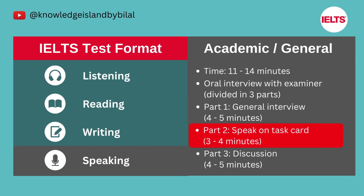Part Two is the individual long turn. The examiner gives the test taker a task card which asks them to talk about a particular topic, including points to cover and instructions to explain one aspect of the topic. Test takers are given one minute to prepare their talk and are provided a pencil and paper to make notes. The examiner asks the test taker to talk for one to two minutes, then stops them after two minutes and asks one or two questions on the same topic. Part Two lasts for three to four minutes including preparation time.